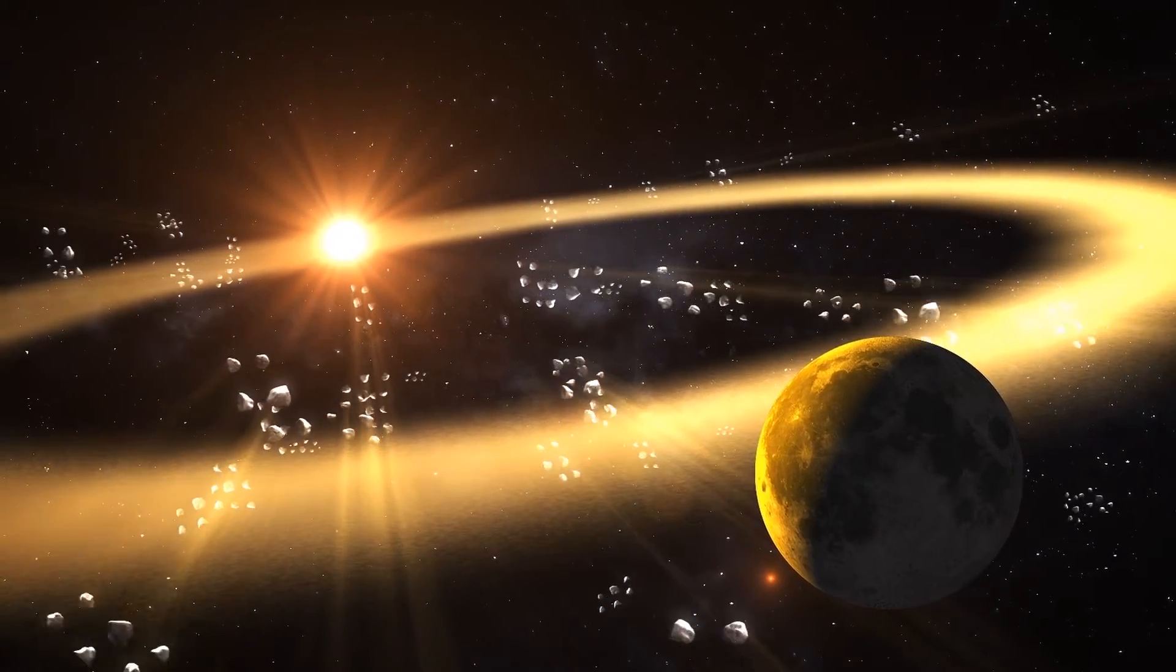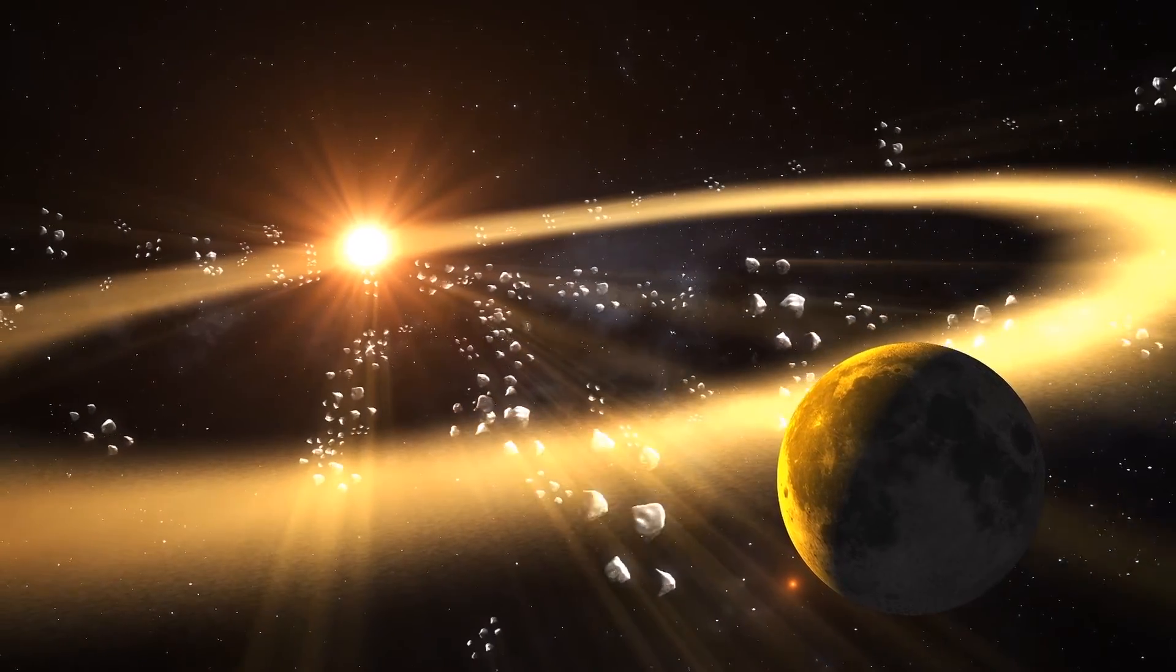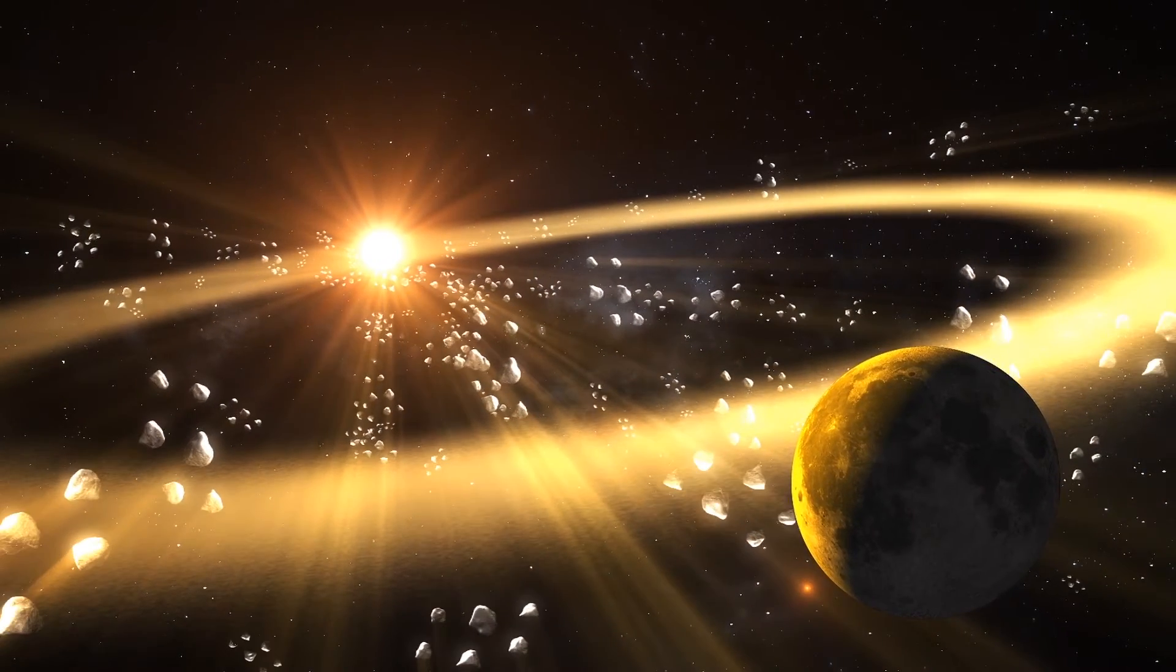The researchers found the Moon's tail glows more brightly during sporadic meteor showers, as opposed to annual meteor showers, which can make the tail glow more brightly but less so compared to sporadic meteor showers.